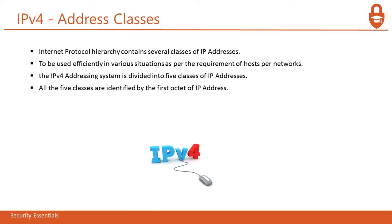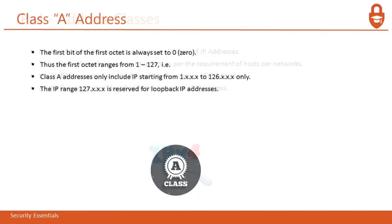Starting with Class A: the first bit of the first octet is always set to zero, so the first octet ranges from 1 to 127. Class A addresses only include IPs starting from 1.x.x.x to 126.x.x.x. The IP range 127.x.x.x is reserved for loopback IP addresses, so usable Class A addresses are 1 through 126.